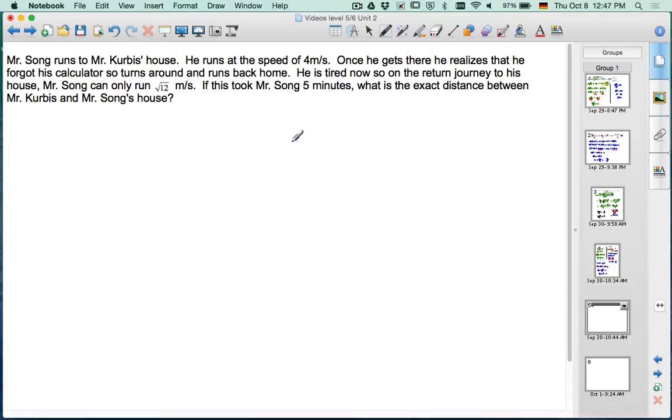Okay, so I'm going to draw a picture. So here's Mr. Song's house, and here is Mr. Kervis's house. And we don't know the distance between them, and that's what we're looking for, so let's call this distance D.